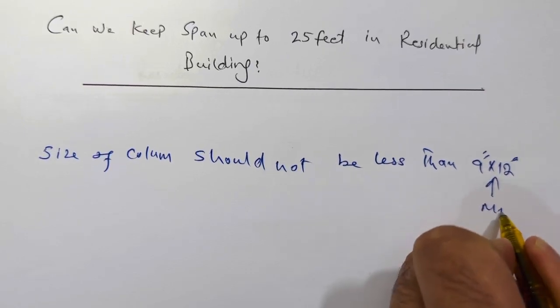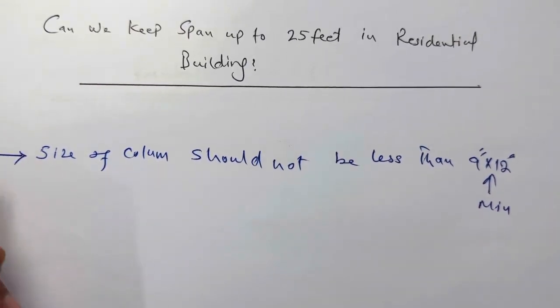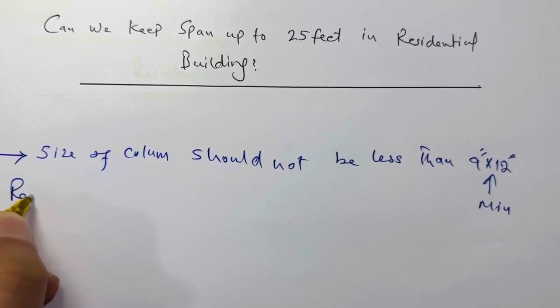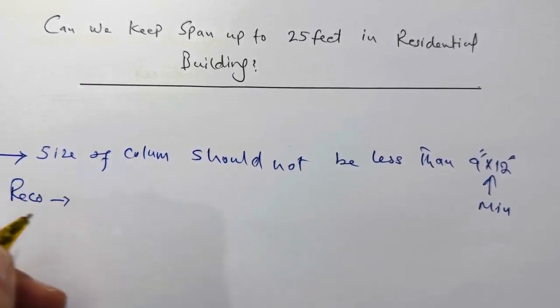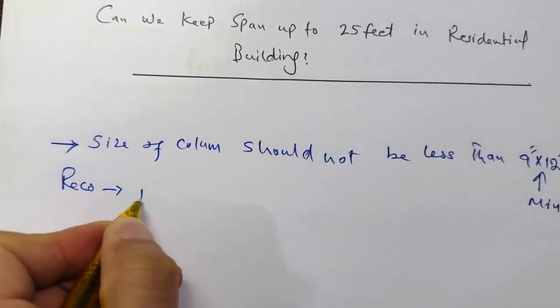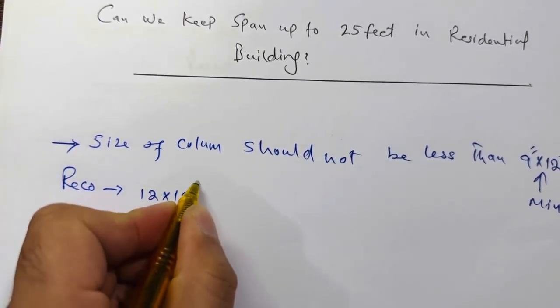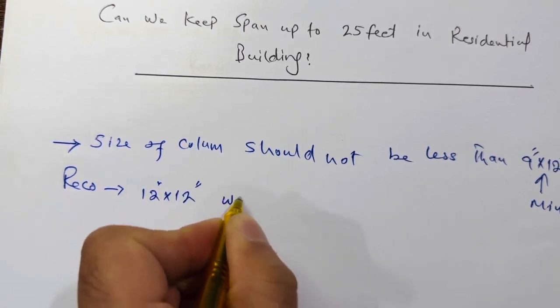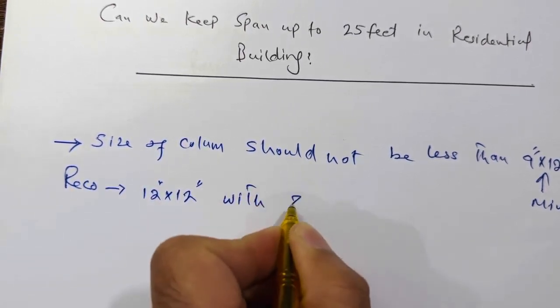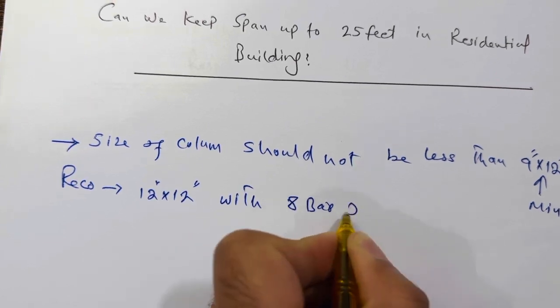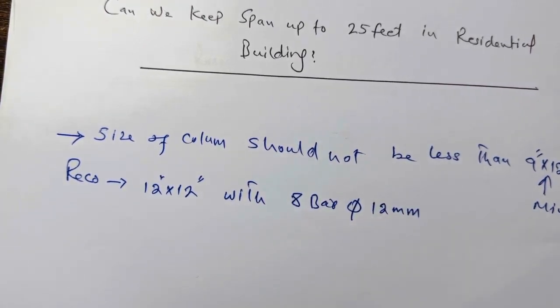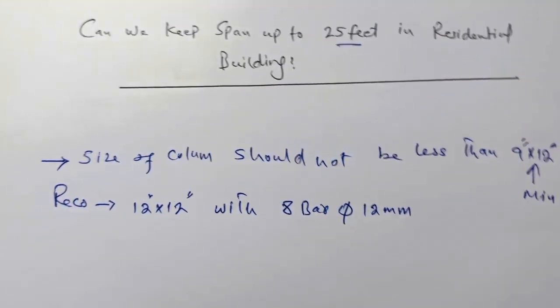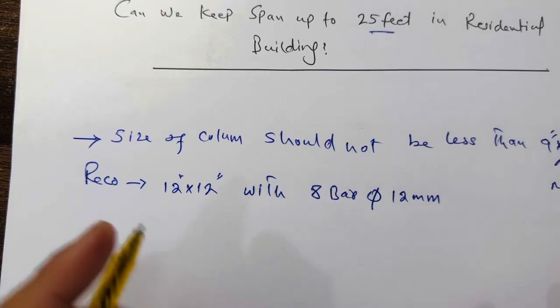But I am recommending you the size of column - this is my recommendation: use or keep the size of the column 12 by 12 inches with eight bars, and the diameter should not be less than 12 millimeter. This is my recommendation especially for G+1 story if the span is up to 25 feet.